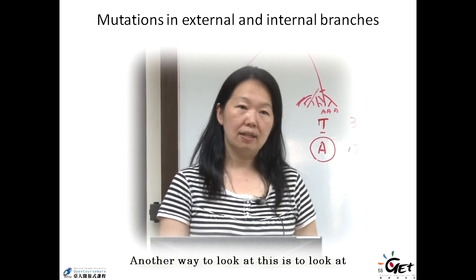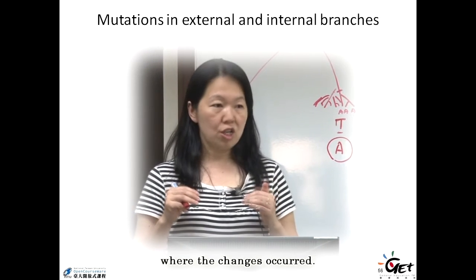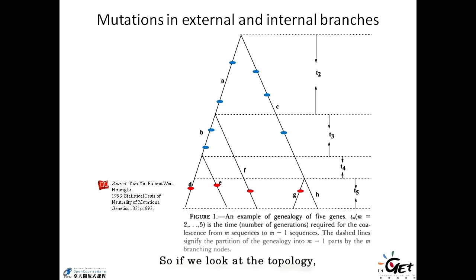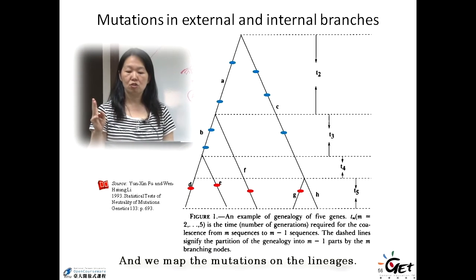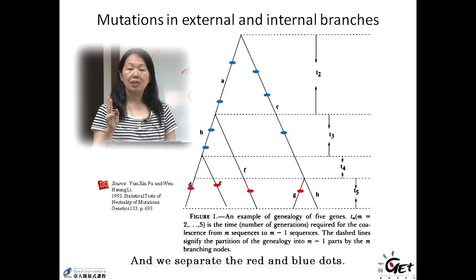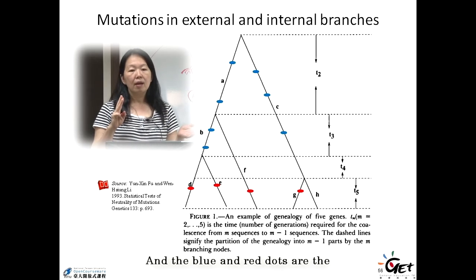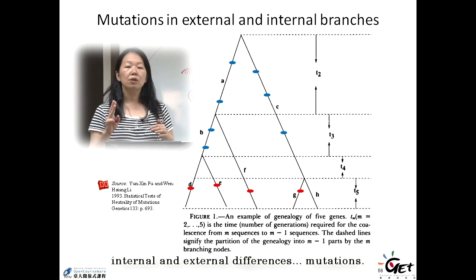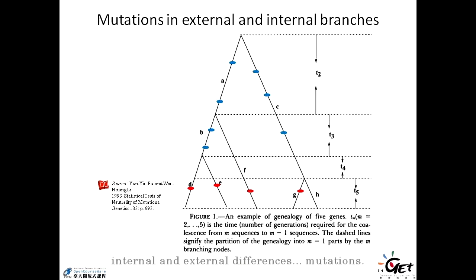Another way to look at this is to look at where the changes occurred. So if we look at a topology like this one and we map the mutations on the lineages and we separate the red and blue dots. The blue and red dots are the internal and external different mutations.